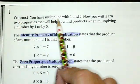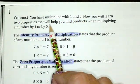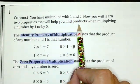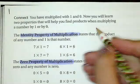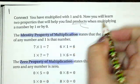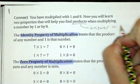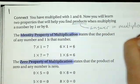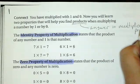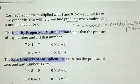It says connect: you have multiplied with one and zero. Now you will learn two properties that will help you find products when multiplying a number by one or zero. Remember, a product is the answer in a multiplication problem.